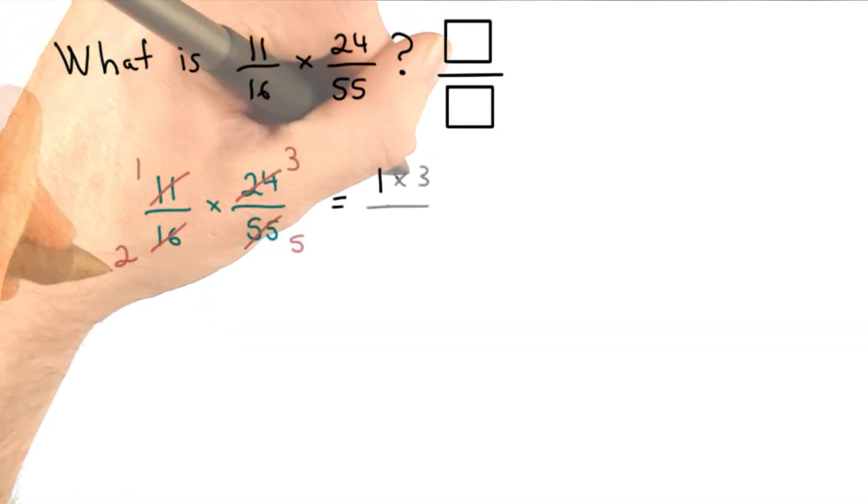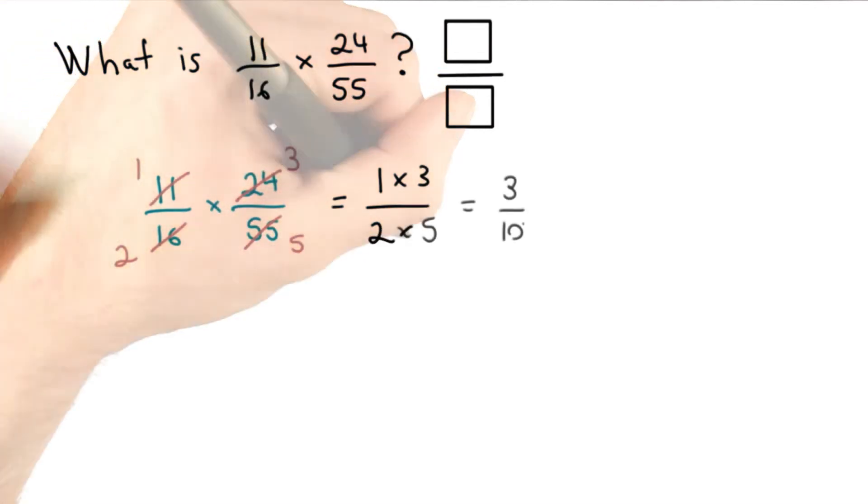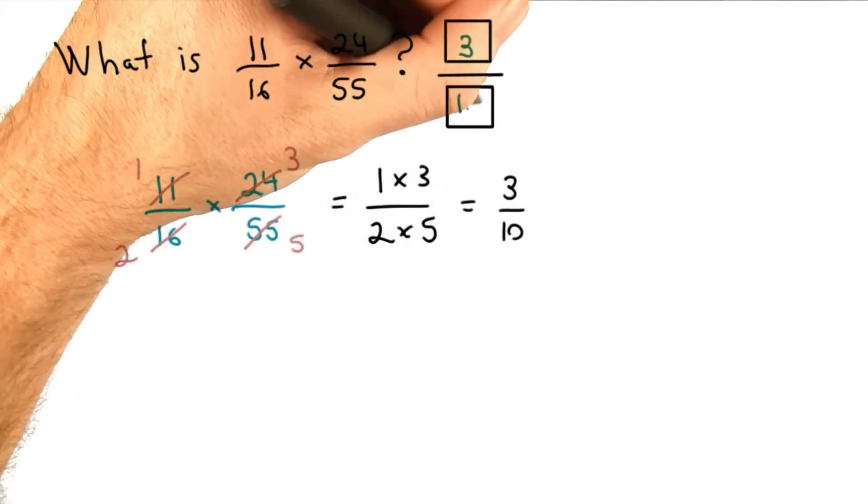So I have 1 times 3 in my numerator, and 2 times 5 in my denominator. So I get 3 tenths. If you said 3 tenths, nice work.